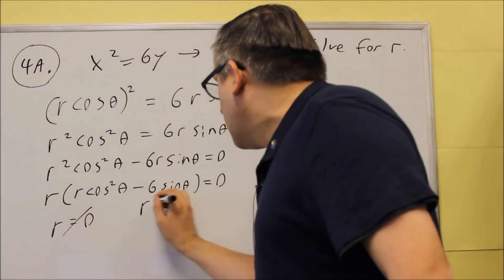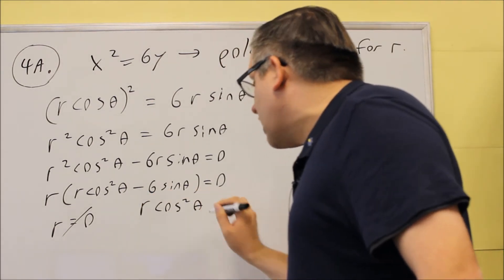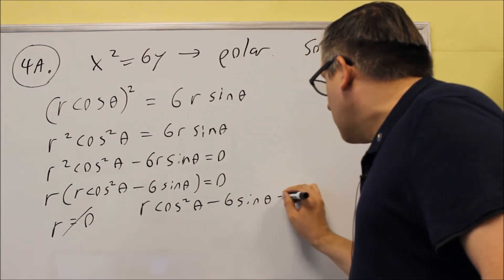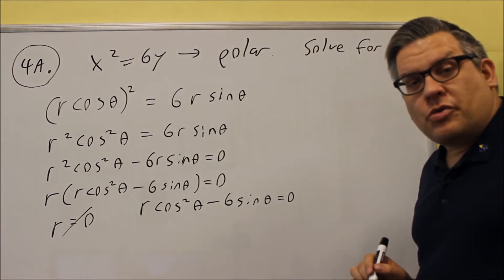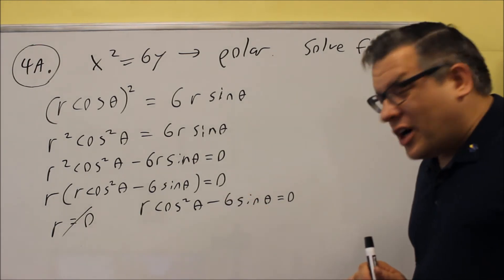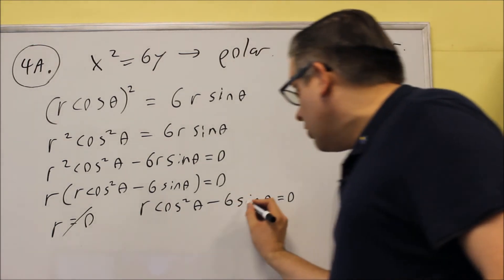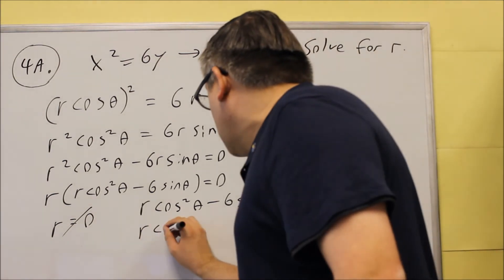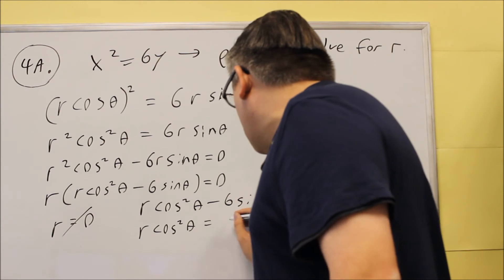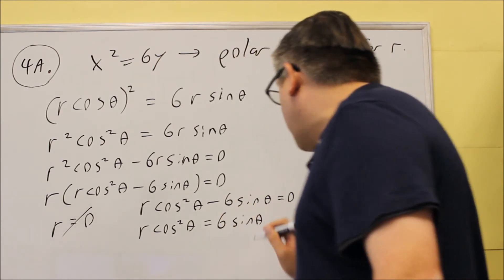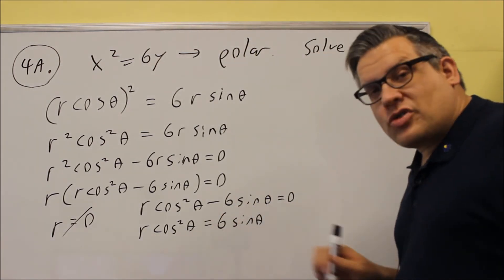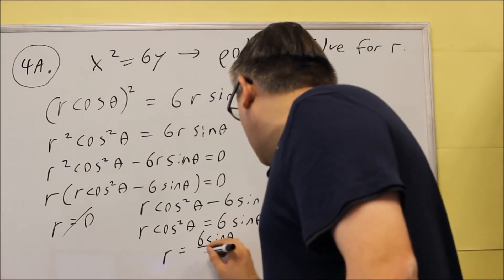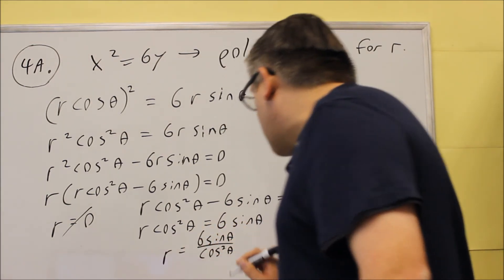The other answer we'll get is by taking R cosine squared theta minus 6 sine theta and setting that equal to zero. You want to get R by itself, so we're going to take this term and add it over to the other side. So we're going to do R cosine squared theta equals 6 sine theta. Then we want to divide both sides by cosine squared, and we'll get R equals 6 sine theta divided by cosine squared theta.